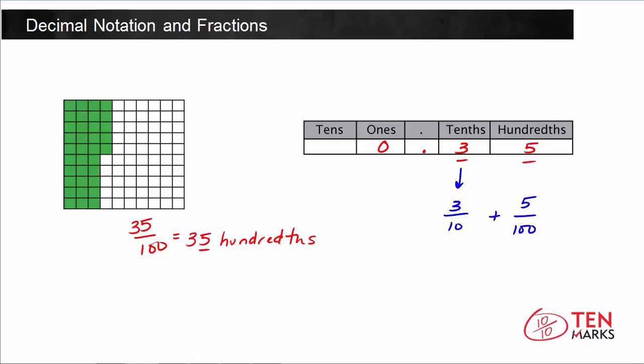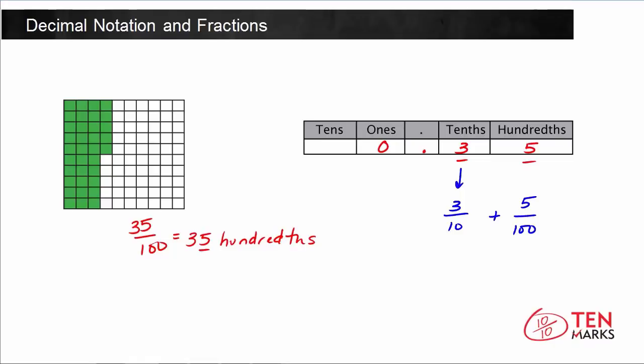Now let's take a look at this decimal on a number line. We're going to think about the number 35 hundredths or 0.35, and we want to place this decimal on the number line.